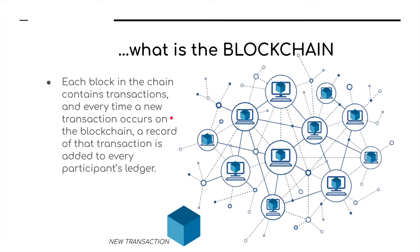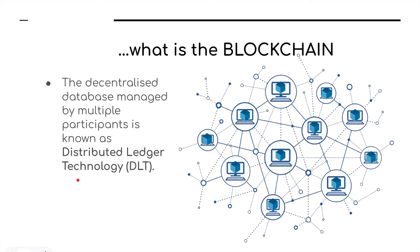Each block in the chain contains transactions, and every time a new transaction occurs on the blockchain, a record of that transaction is added to every participant's ledger. The centralized database managed by multiple participants is known as Distributed Ledger Technology, or DLT.